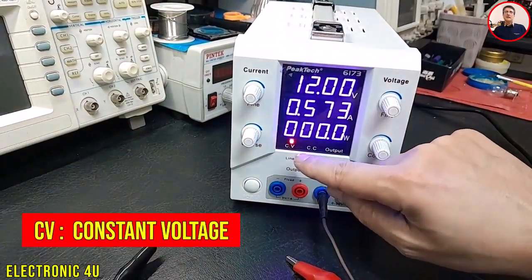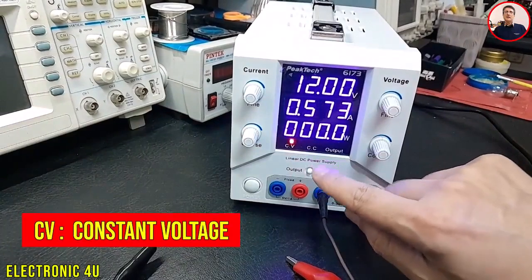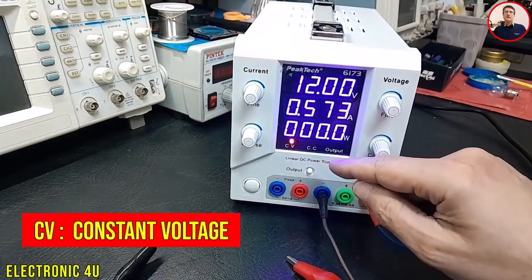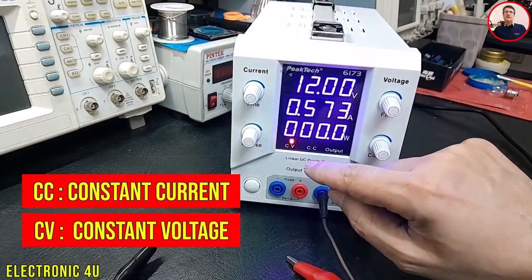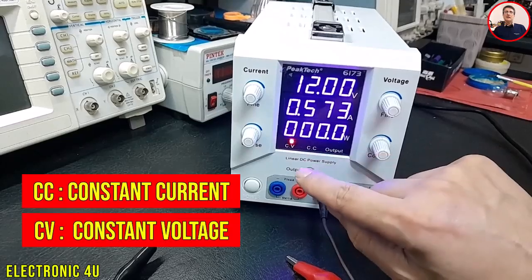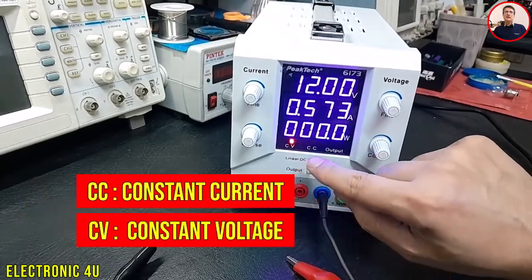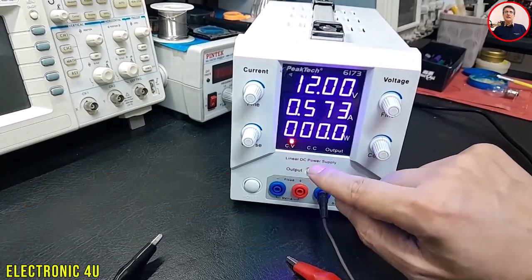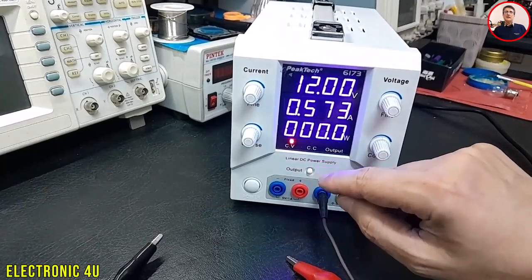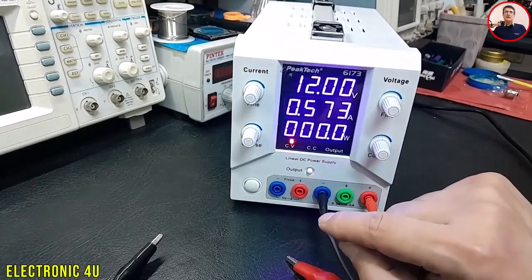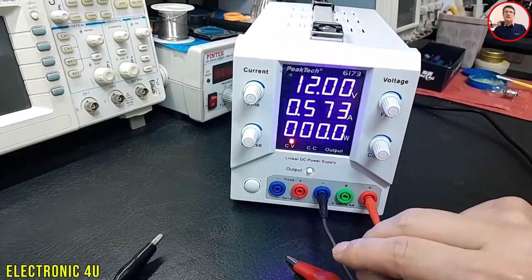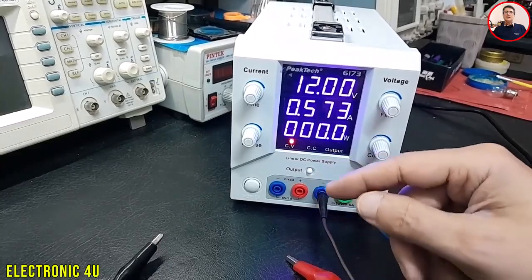CV means constant voltage - the device works in constant voltage mode. CC means constant current - the device works in constant current mode. In CC mode, the device limits the current to the value we set and does not allow it to go higher, even if the voltage drops. Now we will test these modes practically.